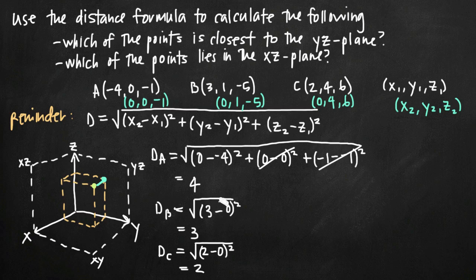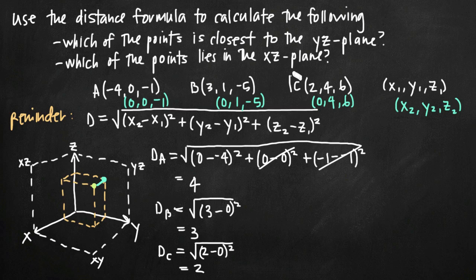So the distances between points A, B, and C and their corresponding points on the yz-plane are 4, 3, and 2 respectively. Because d_C equals 2, which is the smallest value, we can say that point C is the point closest to the yz-plane.